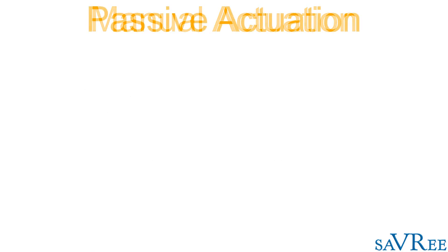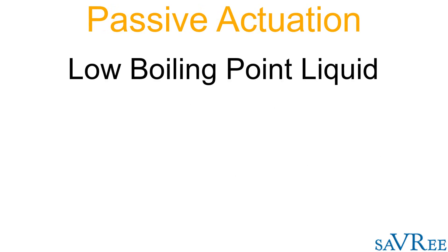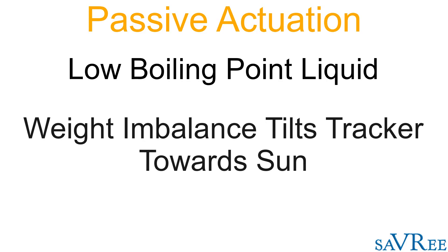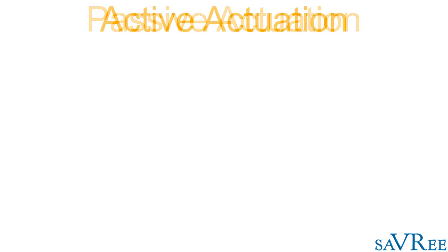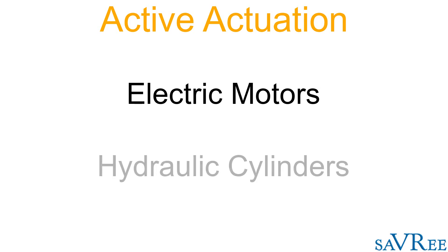The passive type of solar tracker uses a liquid with a low boiling point, which when exposed to the sun's rays will evaporate and cause an imbalance, which causes the solar tracker to lean towards the direction of the sun's rays. Passive solar trackers have the advantage that they require very few moving parts compared to active solar trackers. Active solar trackers rely upon actuators such as electric motors or hydraulic cylinders in order to change the position of the solar tracker. The most common actuators are electric motors and hydraulic cylinders or hydraulic rams.